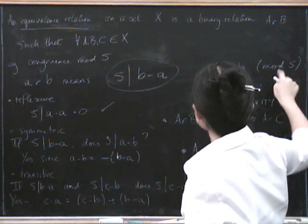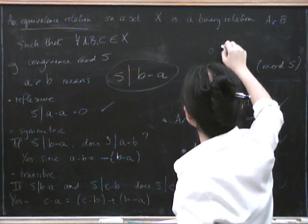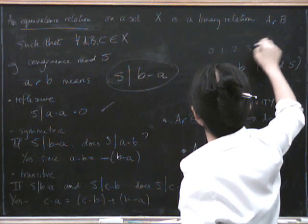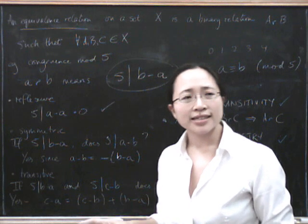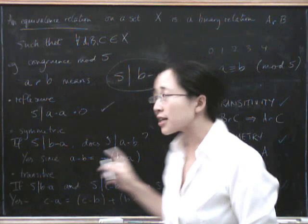And that's why it makes sense for us to do modular arithmetic using only a very small number of numbers. So if we're doing modular arithmetic mod five, we can just use the numbers zero, one, two, three, and four. We don't have to use any more.